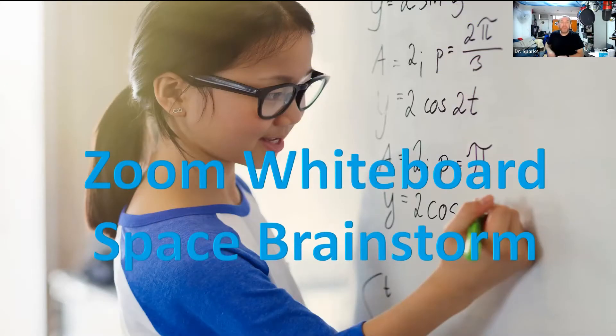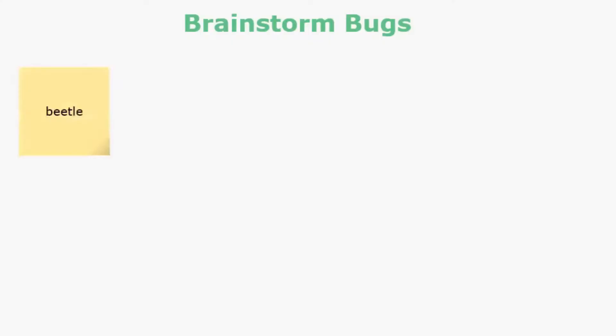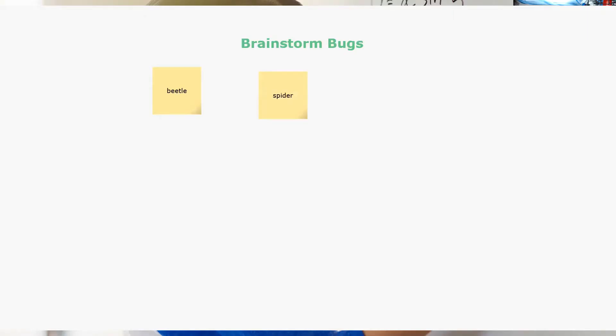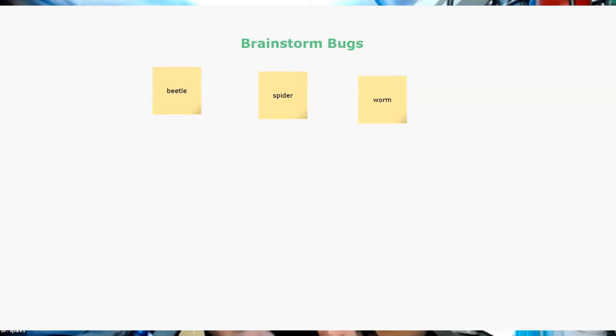Boys and girls, it's time to do some bug and insect brainstorming. I want you to tell me all the bug words you know. Please raise your hand. Tommy, what do you have? Beetle. What else? Annie — a spider. That's a bug. Tom, what's another one? A worm. Yeah, that's a bug — a worm. We can call that a bug because it's a creepy crawly worm.